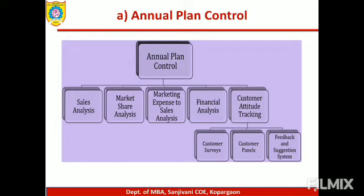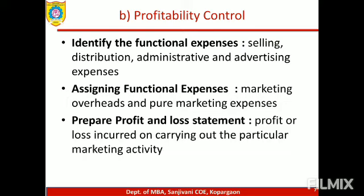The next type is Profitability Control, which has three steps. First, identify functional expenses — selling expenses, distribution expenses, administrative expenses, and advertising expenses. Second, assign functional expenses by classifying them into marketing overheads and pure marketing expenses. Marketing overheads include costs like hotel stays or rented offices. Third, prepare a profit and loss statement for each marketing activity to determine profit or loss incurred.